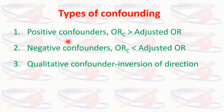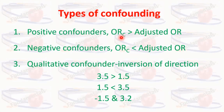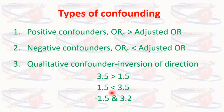Confounders may be of three types: positive confounders, negative confounders, and qualitative confounders. If the crude odds ratio is more than the adjusted odds ratio — for example, crude OR is 3.5 and adjusted OR is 1.5 — then it is a positive confounder. If the crude odds ratio is less than the adjusted odds ratio, then it is a negative confounder. And if it reverses in direction, then it is a qualitative confounder.